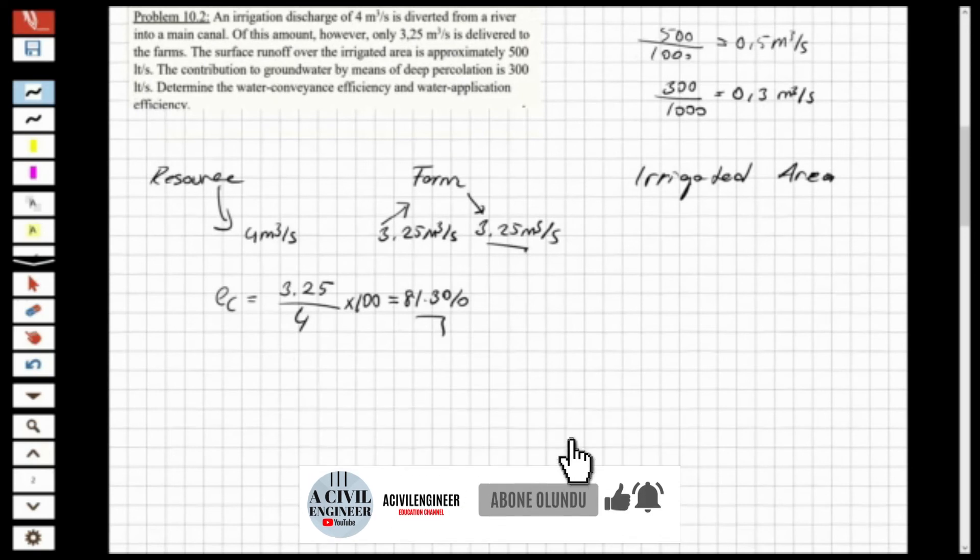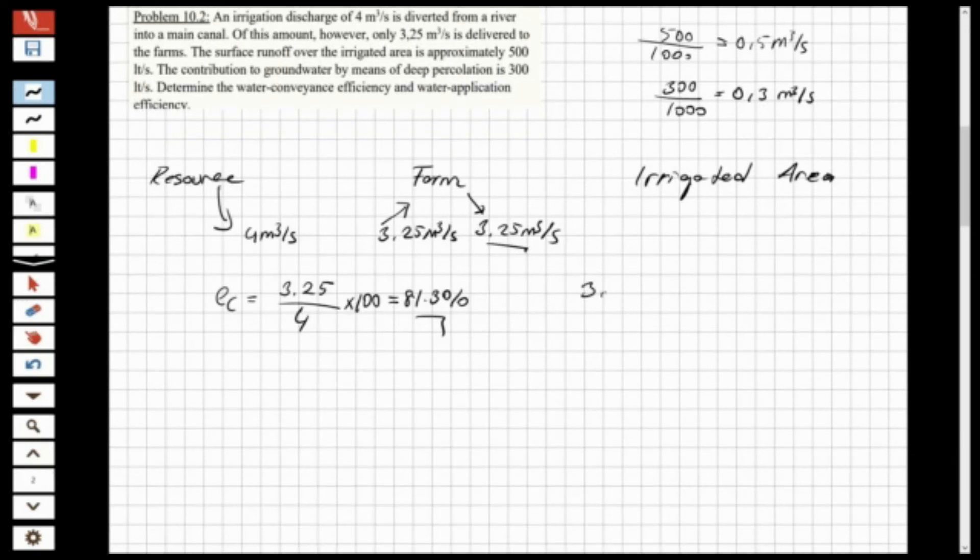I'm going to write it also here: 3.25, I have the water comes from the farm to the area for application. I'm going to take as negative because these are the lost: minus 0.5 minus 0.3, it's equal to 2.45, the applied water, 2.45 meter cubic per second.